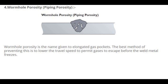Number 4: Wormhole porosity, also known as piping porosity. Wormhole porosity is the name given to elongated gas pockets. The best method of preventing this is to lower the travel speed to permit gases to escape before the weld metal freezes.